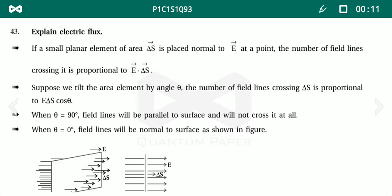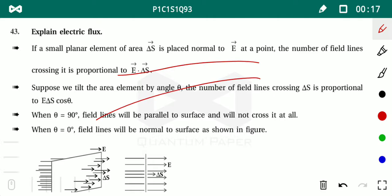Whenever we place any object in the electric field, due to the arrangement or position of the object, there is a possibility that the electric field lines passing through its body show variations.